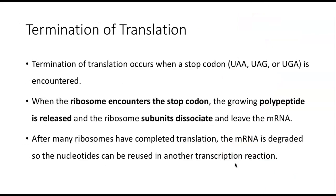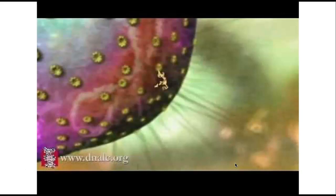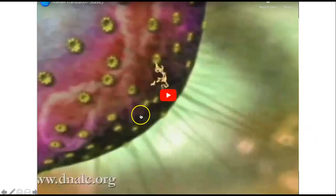Termination of translation occurs when a stop codon — UAA, UAG, or UGA — is encountered. When the ribosome encounters a stop codon, the growing polypeptide is released and the ribosome subunits, large and small, dissociate and leave the mRNA. After many ribosomes have completed translation, the mRNA gets degraded so the nucleotides can be reused in another transcription reaction. Usually when producing a protein from an mRNA, many ribosomes create many copies of that protein.